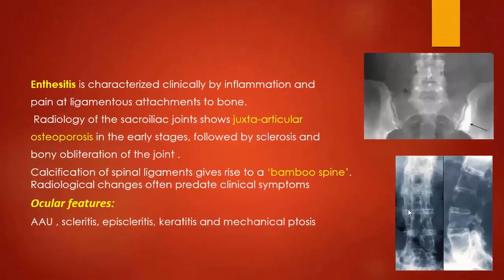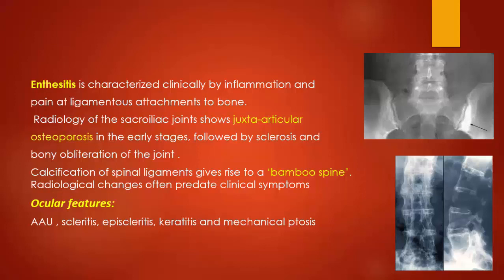The second characteristic feature in ankylosing spondylitis is enthesitis, which is characterized by inflammation and pain at the ligamentous attachment to bone. Radiology shows sacroiliac joint changes with juxtaarticular osteoporosis, followed by sclerosis and bony obliteration of the joint. The ocular features in ankylosing spondylitis include acute anterior uveitis, scleritis, episcleritis, keratitis, and mechanical ptosis.